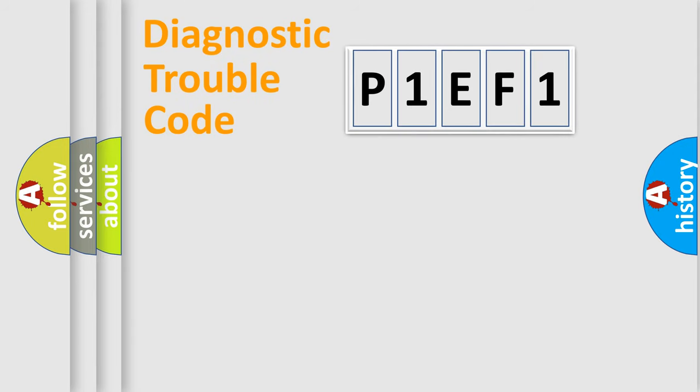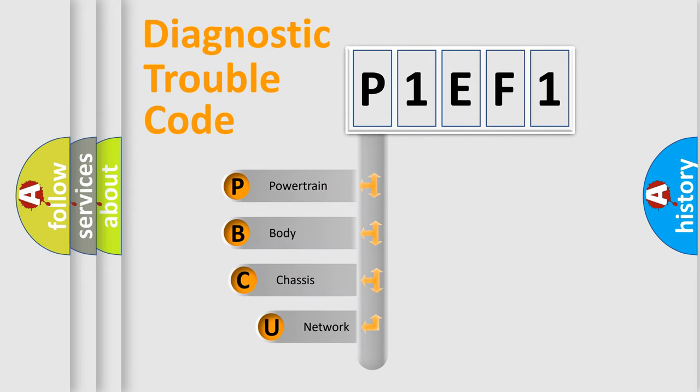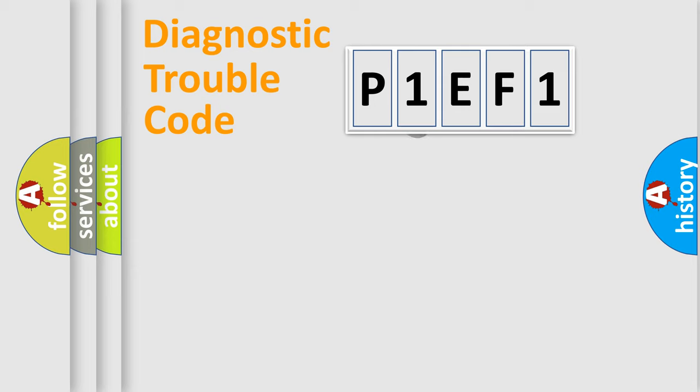First, let's look at the history of diagnostic fault code composition according to the OBD2 protocol, which is unified for all automakers since 2000. We divide the electric system of automobile into four basic units: powertrain, body, chassis, network. This distribution is defined in the first character code.